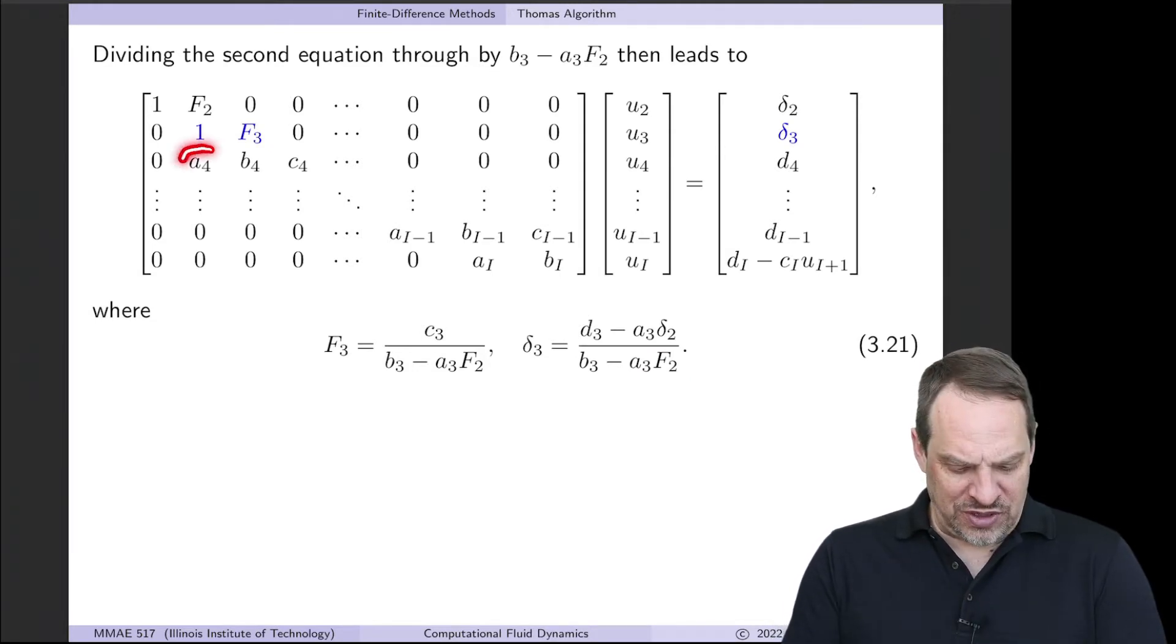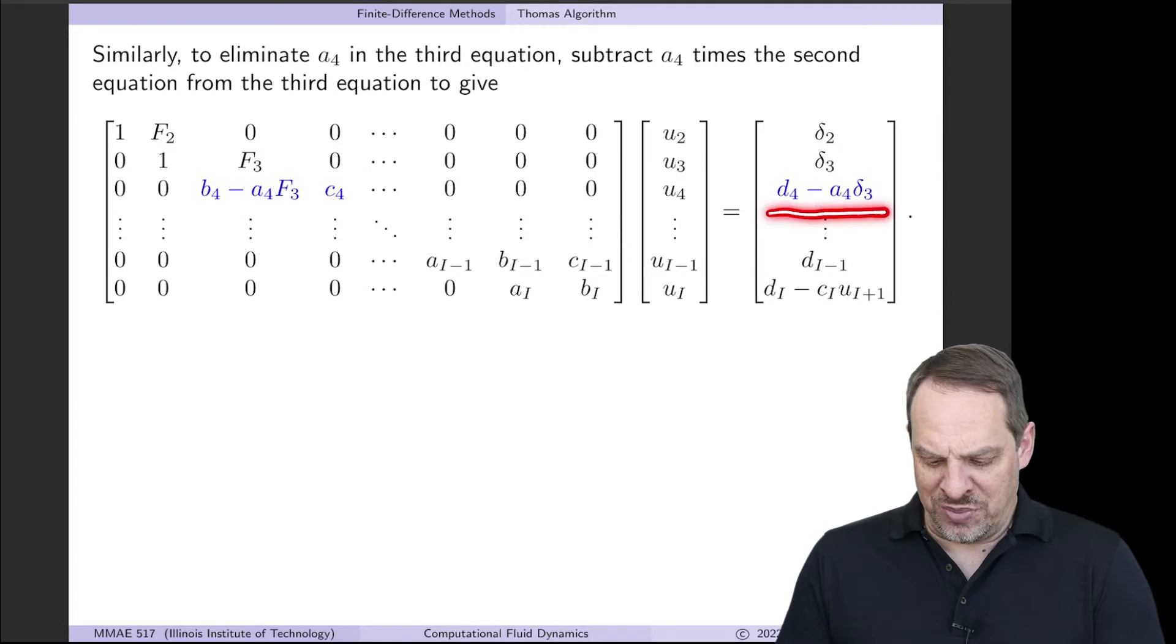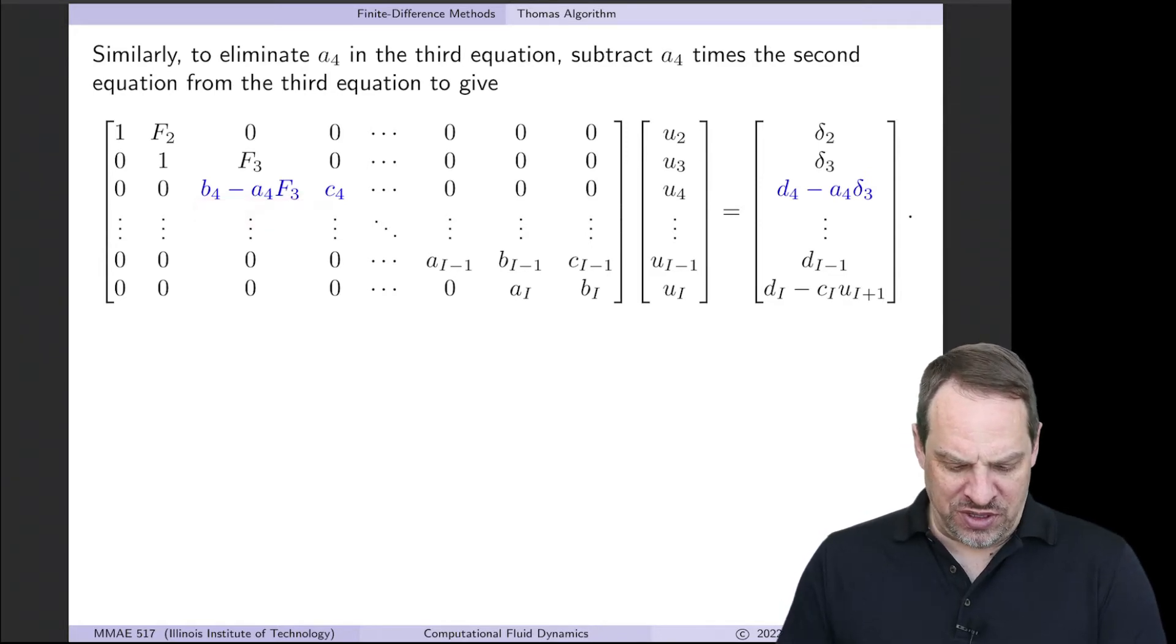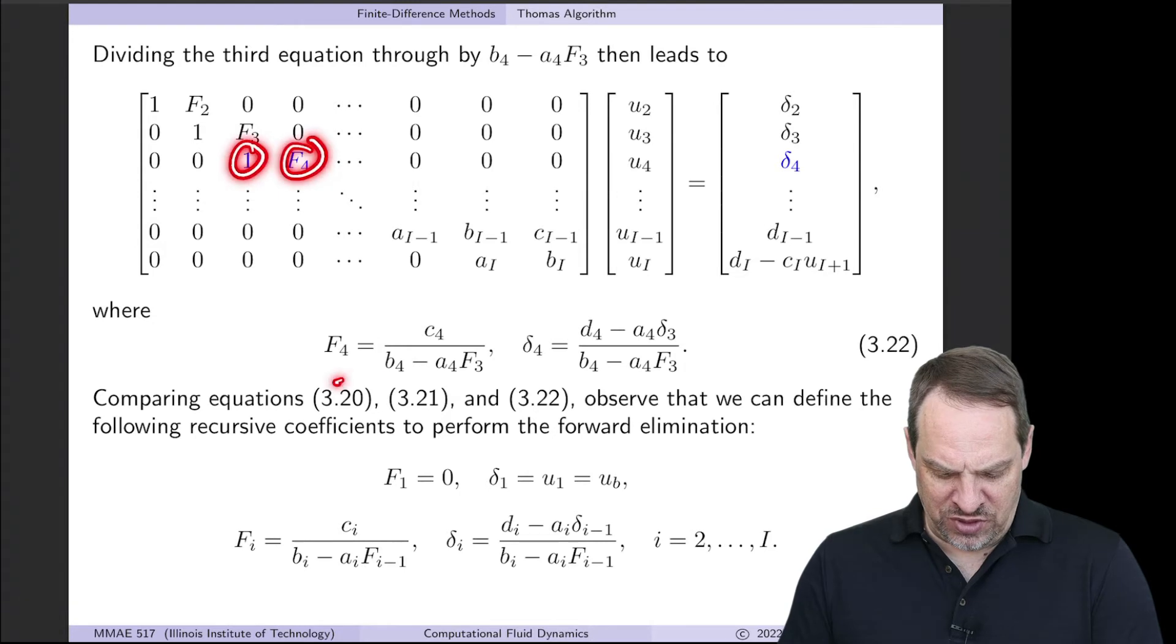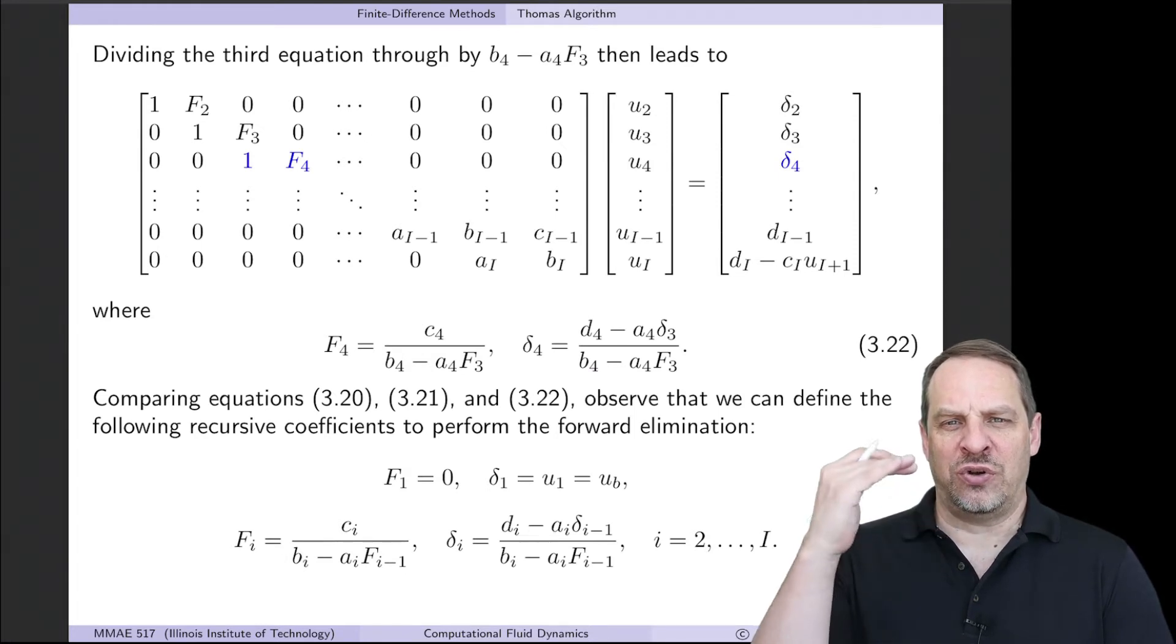The next step then is to get rid of this A4 and make it a 0. So we're going to multiply this second row by A4 and subtract to give us a 0, and then a B4 minus A4 F3, C4, D4 minus A4 delta 3. Then to make this a 1, we divide by the B4 minus A4 F3 to give us a 1, capital F4, which is C here, delta 4, which is C here, using exactly the same process. We continue that process all the way through, row by row, to complete the forward elimination.